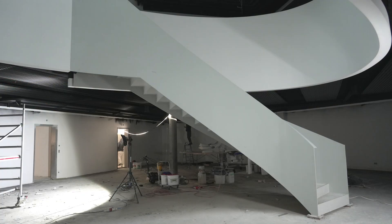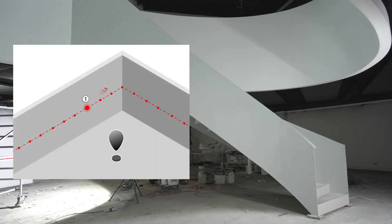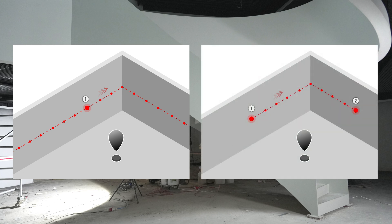Discover other scan types: Horizontal 360-degree or horizontal point-to-point. For horizontal scans, the first point defines the scan height. You can also move the scan higher or lower using the offset button.